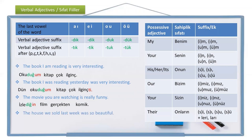And the last example for this suffix: the house we sold last week was so beautiful. The noun is ev. Sell is sat, add the verbal adjective suffix: sattık, then the possessive adjective suffix for 'we' — -ımız: sattığımız ev. When? Last week — geçen hafta. So: geçen hafta sattığımız ev çok güzeldi — past tense suffix added.